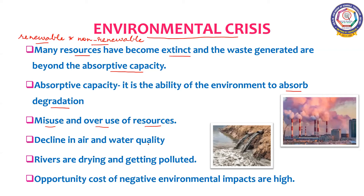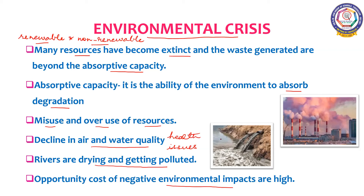When we misuse or overuse resources, it leads to environmental crisis — including decline in air and water quality, resulting in respiratory and waterborne diseases causing health issues. Rivers are drying up and getting polluted, causing drinking water problems. The opportunity cost of negative environmental impacts has become very high, as the government must take many steps to control water and air pollution so that people can live in a healthy atmosphere.